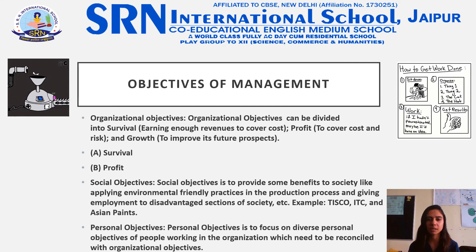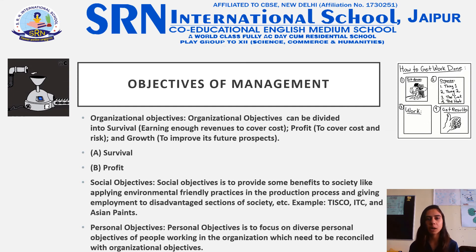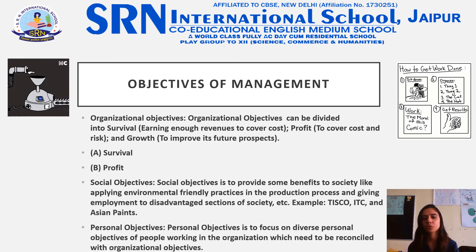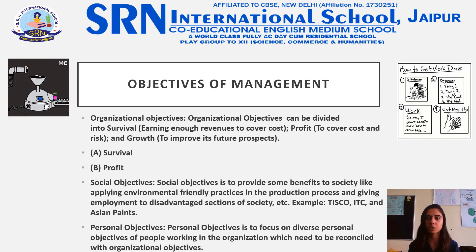Social objectives involve providing benefits to society, such as applying environment-friendly practices in the production process and giving employment to disadvantaged sections of the society — for example, TISCO, ITC, and Asian Paints. Personal objectives focus on the diverse personal objectives of people working in the organization, which need to be reconciled with the organizational objectives.